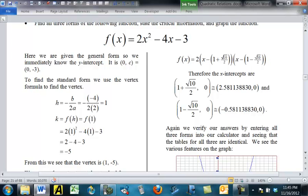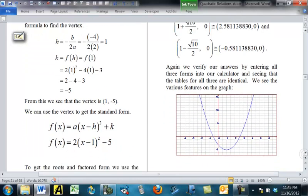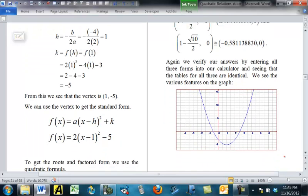is negative 5, so 1 negative 5 is the vertex, and that means the standard form down here is A times X minus 8 squared plus K equals Y. So, F of X equals 2 times X minus 1 squared minus 5.